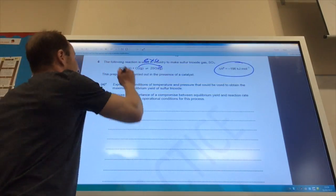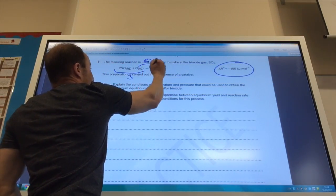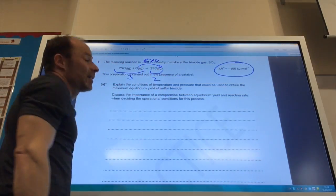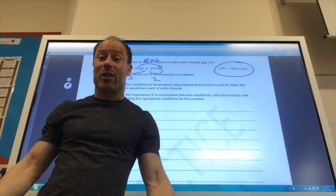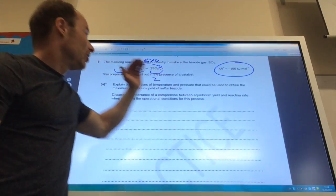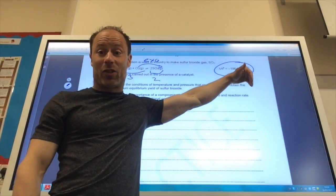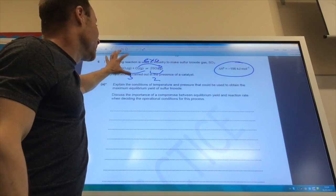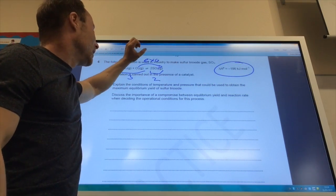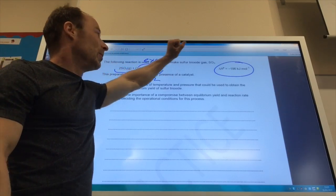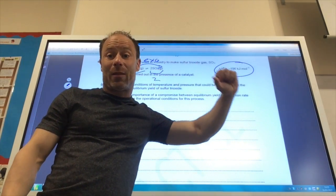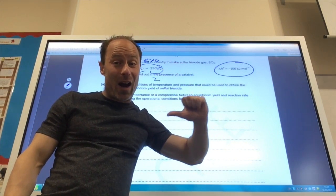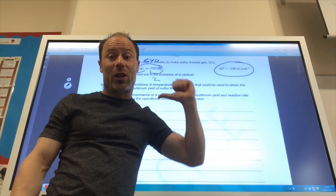How about pressure? Well I've got 3 moles of gas on that side, and only 2 moles of gas on that side, so I want to use a high pressure, because by using a high pressure, the reaction is again driven from the left to the right, so from the side of the higher number of moles to the lower number of moles. So in summary, to maintain the highest yield, low temperature, high pressure.